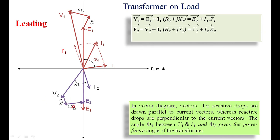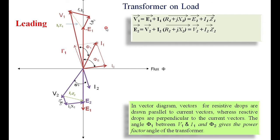For the primary side in the leading case, I2R2 plus I2X2 equals I2Z2, so E2 = V2 + I2Z2. Draw I1' opposite to I2 with magnitude K times I2, add I0 to get I1. Then add I1R1 parallel to I1 and I1X1 perpendicular to I1 to E1, getting V1. The sum I1R1 + I1X1 = I1Z1. The angle between V1 and I1 is the primary power factor.